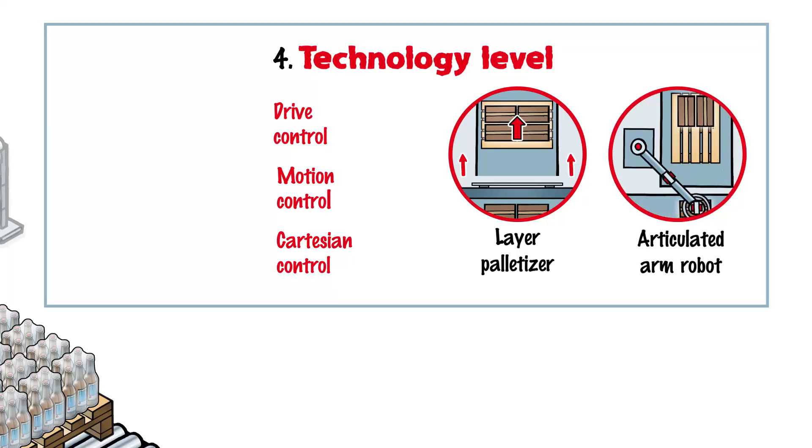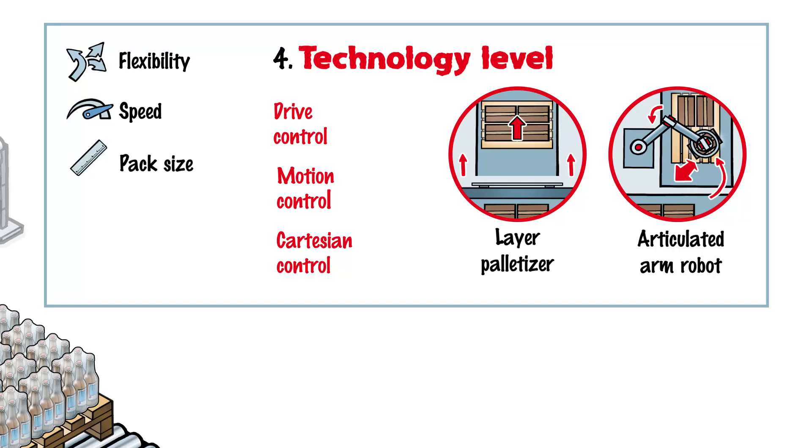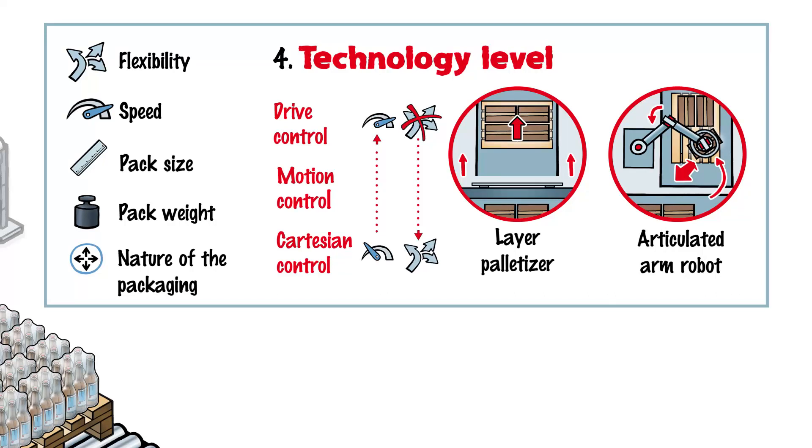If an articulated arm robot is being used, it moves the individual products onto the pallet one by one. The groups differ greatly in terms of flexibility and speed. Pack size, pack weight, and the nature of the packaging being used are also key factors when it comes to selecting the machine.